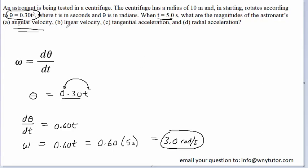Now, for part B, to determine the linear velocity, we simply have to use the following equation, where the linear velocity v is equal to the radius of the astronaut's path multiplied by the angular velocity, which we just determined.